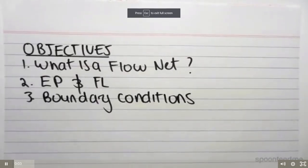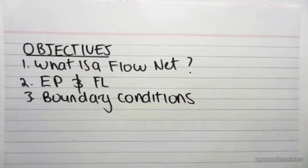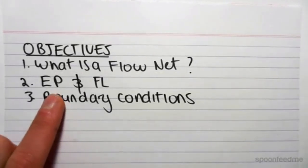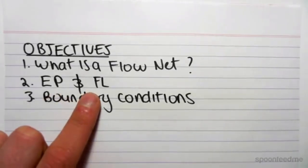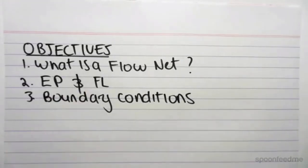In this video I'm going to ask what a flow net is and how do we draw one, to look at what an EP, an equipotential line is, and what an FL, a flow line is, and to establish boundary conditions for our flow net.